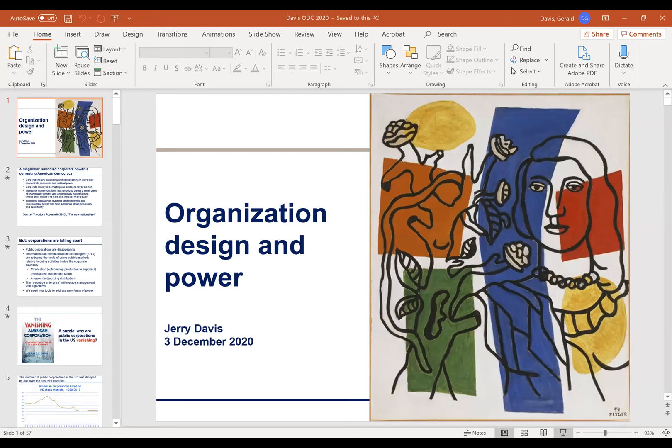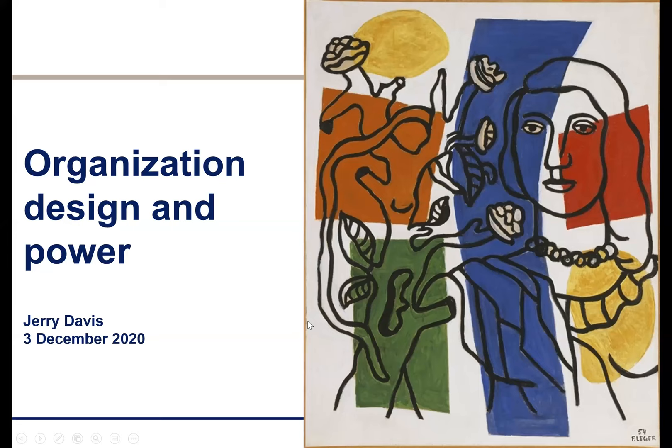I'm going to be talking about design and power today. I'm spending the year at the Center for Advanced Study at Stanford working on a book on corporate power in the 21st century. The theme is really about how the nature of corporate power looks very different in a 21st century corporation than a 20th century corporation, and that has important implications for organization design.